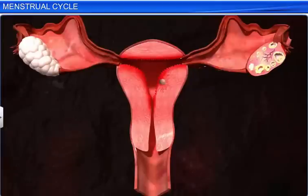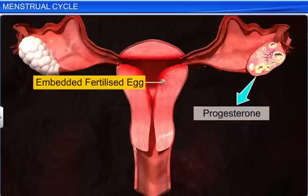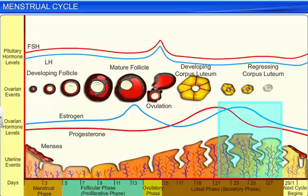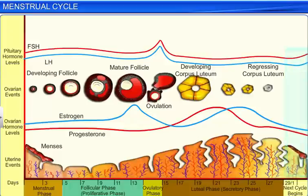Incidentally, the corpus luteum will keep secreting progesterone if a fertilized egg gets embedded in the endometrium. However, in the absence of a fertilized egg, the corpus luteum stops releasing progesterone and degenerates. A drop in the level of progesterone, in turn, triggers menstruation, as well as the restart of the release of LH and FSH by the pituitary gland.